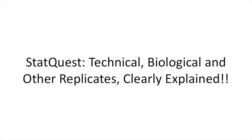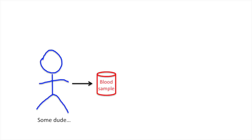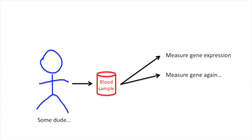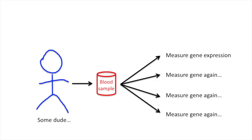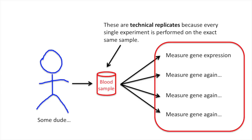Today we're going to be talking about technical, biological, and other replicates, and they're going to be clearly explained. Let's start off with some dude. Let's take a blood sample from that dude. And using that sample, let's measure gene expression. And let's measure it again, and again, and again. These are technical replicates because every single experiment is performed on the exact same sample.